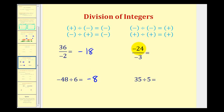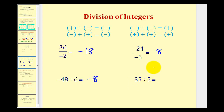Now we have negative 24 divided by negative three. A negative divided by a negative is positive, so this will be positive eight. And then a positive divided by a positive will also be positive — thirty-five divided by five is equal to seven.